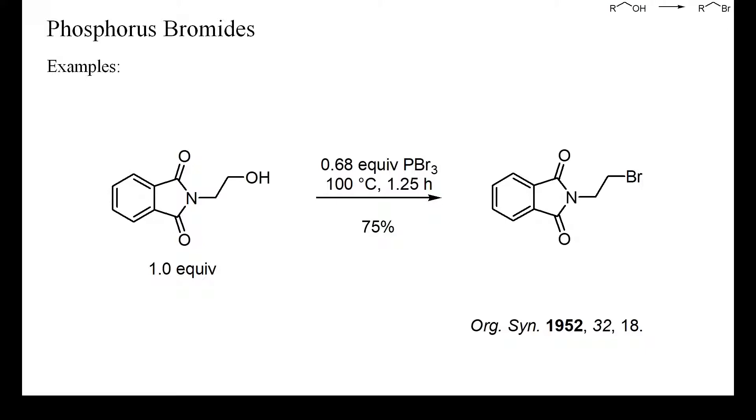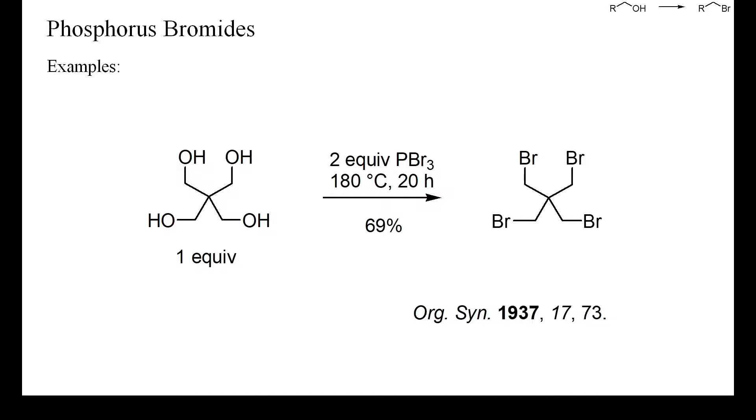Pentaerythritol, the starting alcohol of this example, is neopentyl-like and therefore difficult to deoxyhalogenate. With half an equivalent of phosphorus tribromide at 180 degrees Celsius, each hydroxyl group could, however, be displaced. Thus, phosphorus tribromide is well suited for high-temperature reactions and unreactive alcohols.